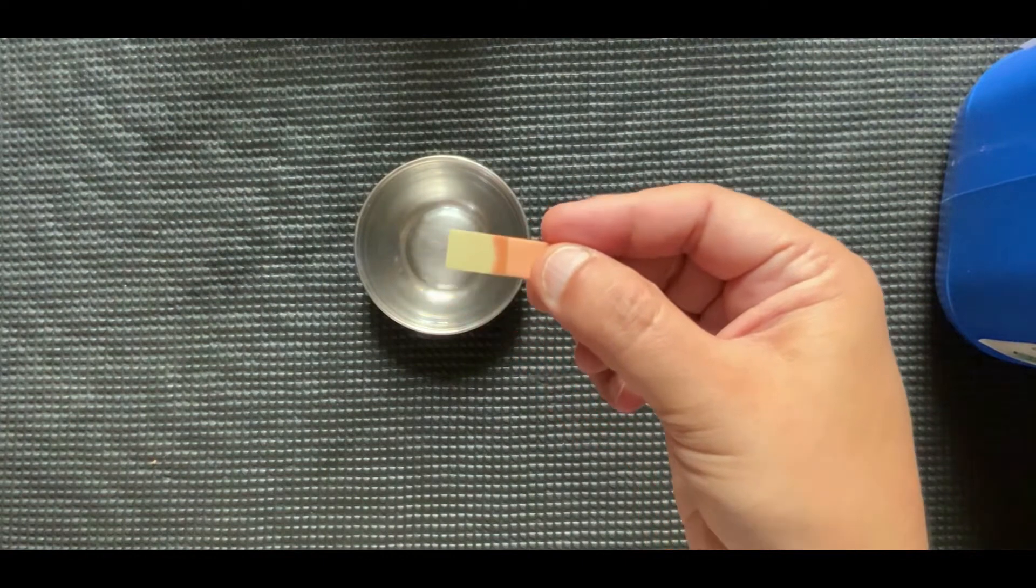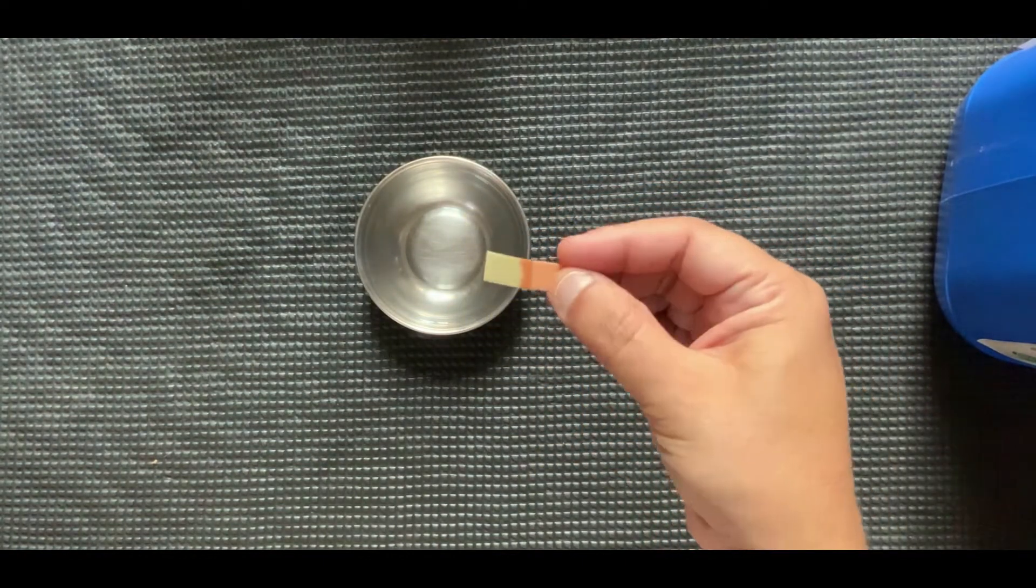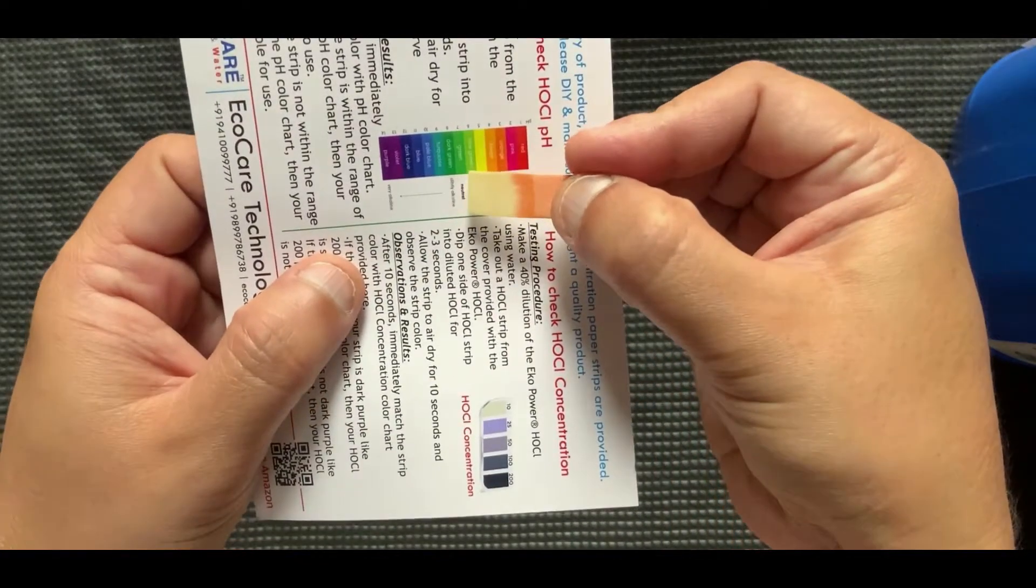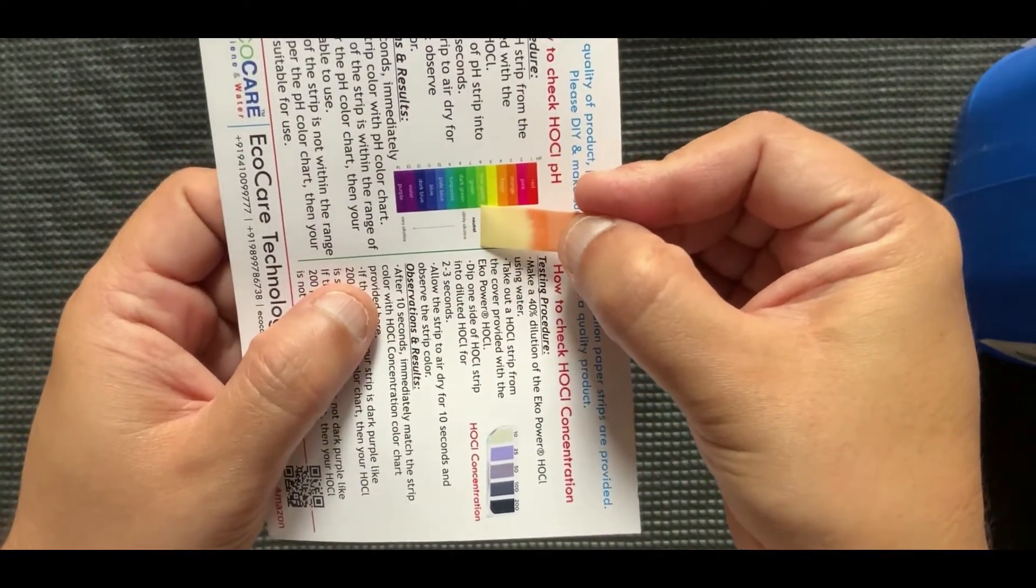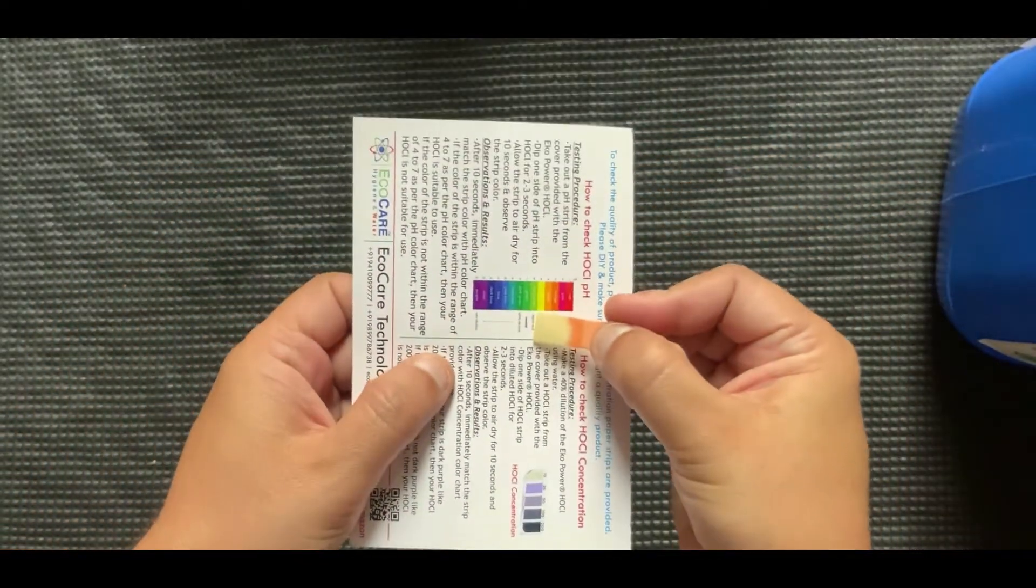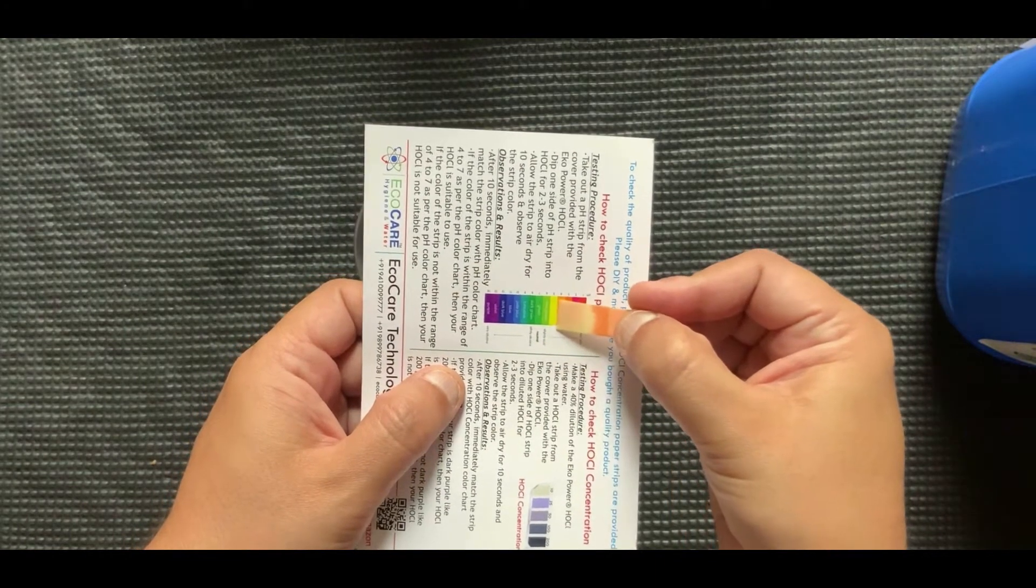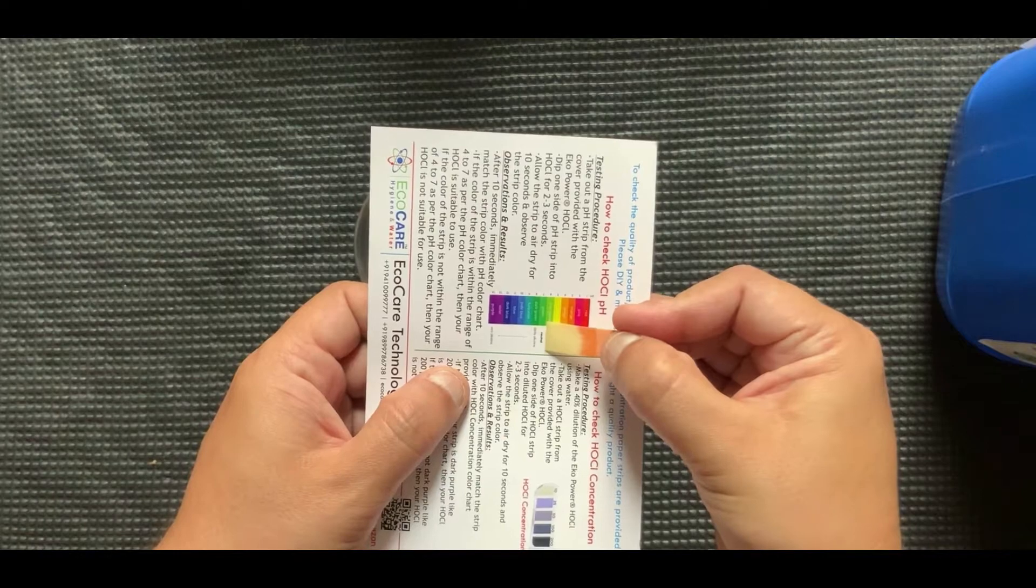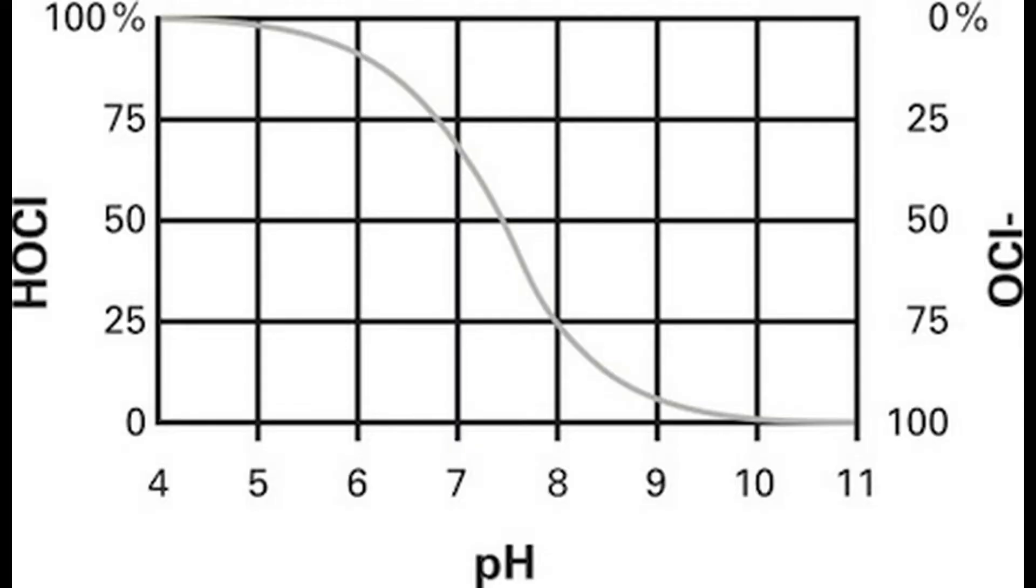Bring this colored strip to the color chart under pH test procedure provided with the kit and match the pH paper strip color with the nearest color in the chart. The number mentioned against the color shall be the pH of HOCL supplied to you. According to recent research, effective pH of HOCL should be between 4 to 6.5.